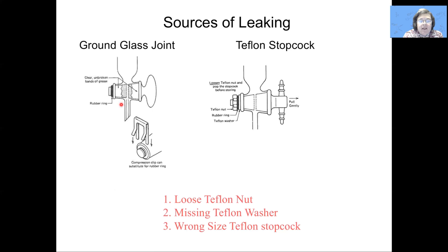For the stopcocks at the bottom of the separatory funnel, they can be made of glass, in which case grease needs to be used to both lubricate the glass joint and to prevent solvent from leaking out through these edges. With the separatory funnels that we typically use, which employ Teflon stopcocks, we have a particular assembly that, when put together properly, prevents leaking through these edges. There are three components: a Teflon nut, a washer, and a rubber O-ring. If this Teflon nut is loose, it might leak. If you're missing the Teflon washer or the O-ring, it might leak. Or if you have the incorrect size stopcock for that joint, it also might leak.